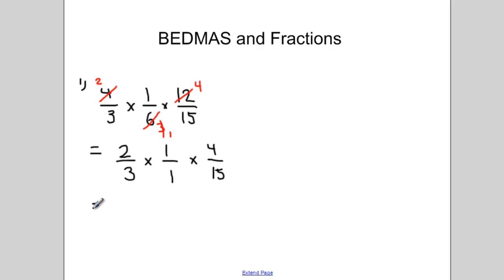So now my fraction question has simplified to 2 over 3 times 1 over 1 times 4 over 15. And then when I multiply this all out, I get 2 times 1 times 4 over 3 times 1 times 15, which is 8 over 45. Which is the same answer I got previously. Reducing before multiplying helps you find a fraction in lowest terms more quickly.